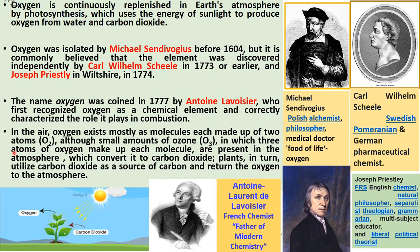In the air, oxygen exists mostly as molecules, each made up of two atoms — O₂ — along with small amounts of ozone, O₃, in which three atoms of oxygen make up each molecule. These convert carbon dioxide back into oxygen. Plants utilize carbon dioxide as a source of carbon and return oxygen back to the atmosphere, so oxygen is continuously replenished by the photosynthesis reaction.